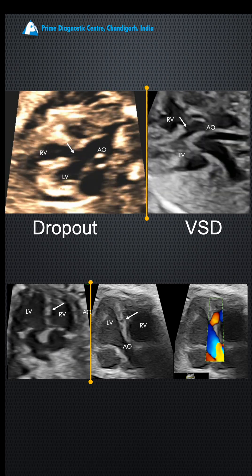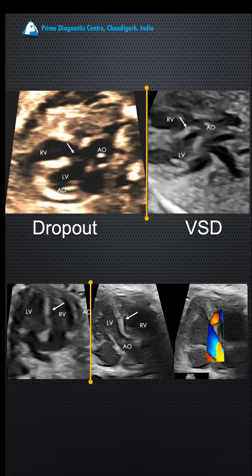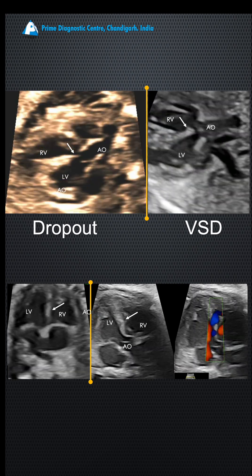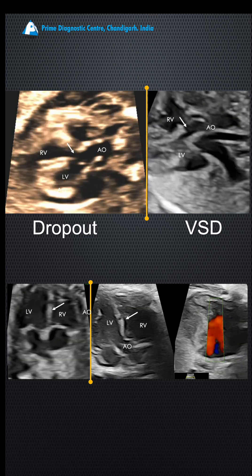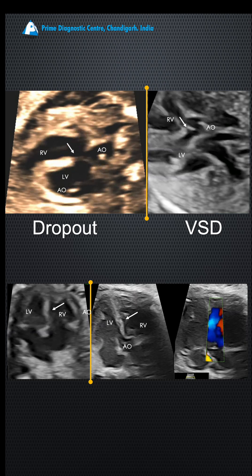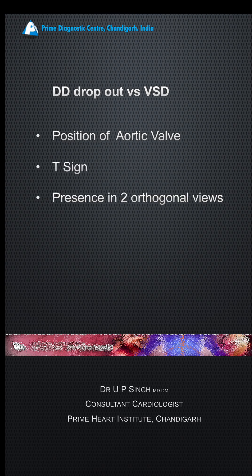In the lower panel you see a couple of dropouts, and on the second video there is another dropout — but color Doppler differentiates them. Color flow indicates this is a VSD; no color flow indicates no VSD. The VSD has to be inferior to the aortic valve — the T-sign — and should be present in two orthogonal planes using color Doppler, which I will discuss in my next segment.